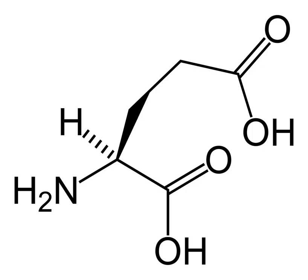Overstimulation of glutamate receptors causes neurodegeneration and neuronal damage through a process called excitotoxicity. Excessive glutamate, or excitotoxins acting on the same glutamate receptors, overactivate glutamate receptors, causing high levels of calcium ions to influx into the postsynaptic cell. High Ca2+ concentrations activate a cascade of cell degradation processes involving proteases, lipases, nitric oxide synthase, and a number of enzymes that damage cell structures often to the point of cell death. Ingestion of or exposure to excitotoxins that act on glutamate receptors can induce excitotoxicity and cause toxic effects on the central nervous system, feeding into a cycle of positive feedback cell death.